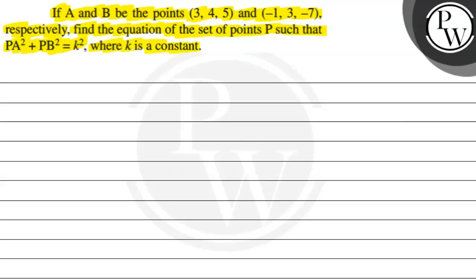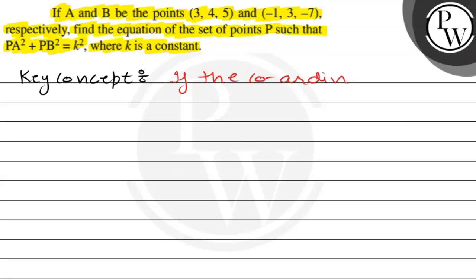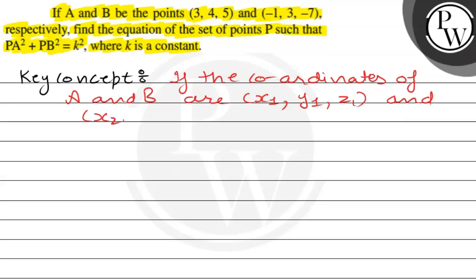So we have two points given: point A is (3, 4, 5) and point B is (-1, 3, -7). The key concept is: if the coordinates of point A are (x1, y1, z1) and the coordinates of point B are (x2, y2, z2) respectively, we will use the distance formula.